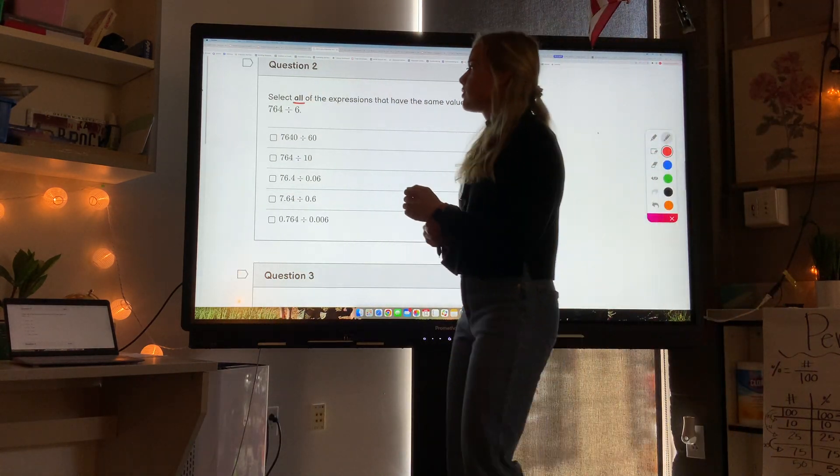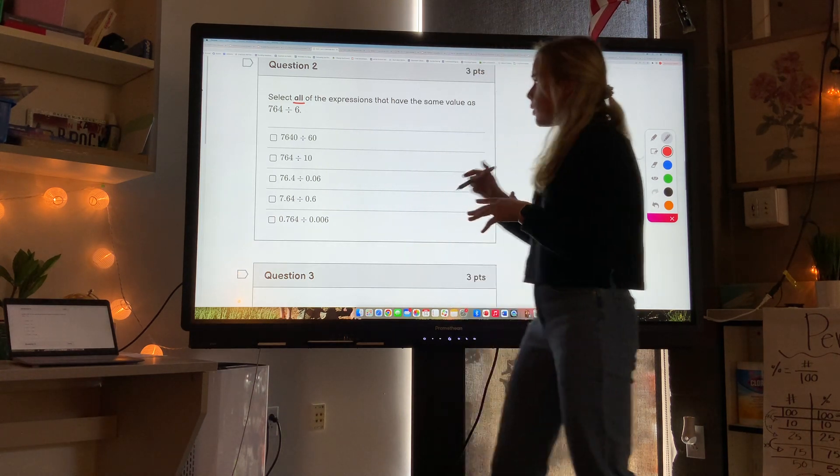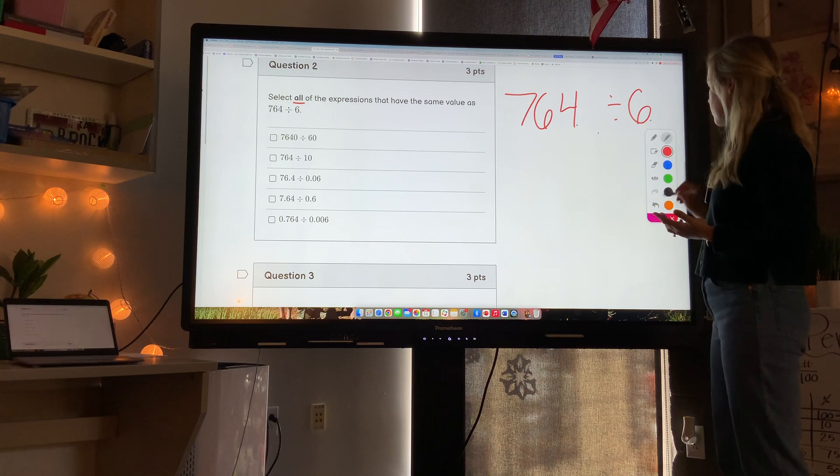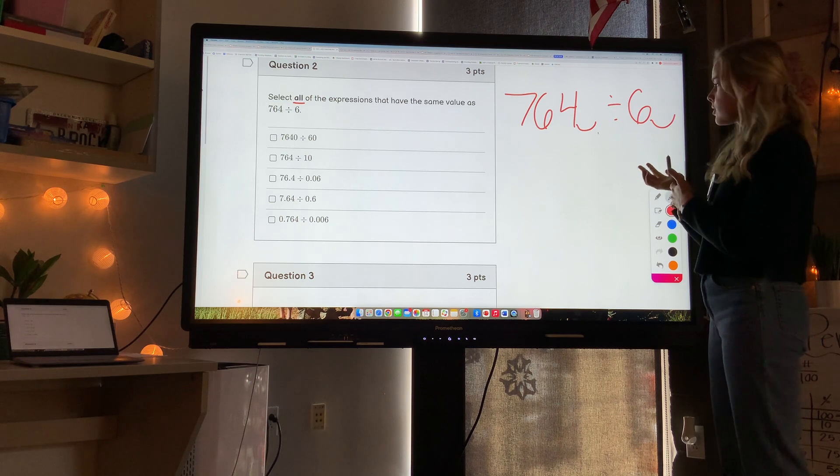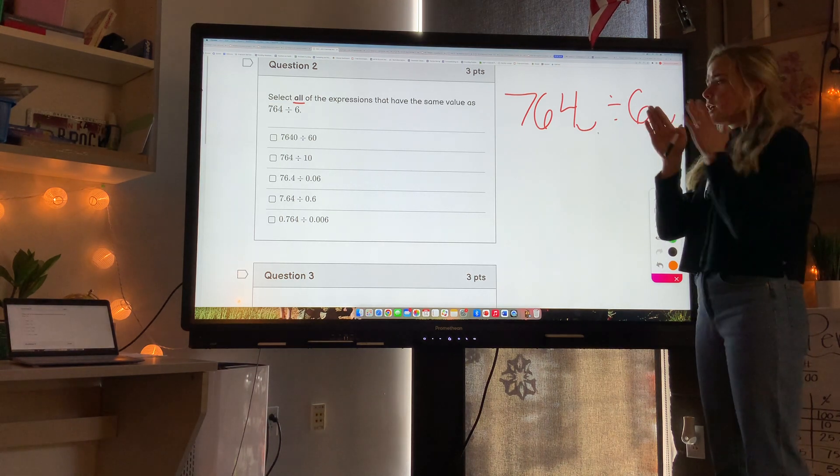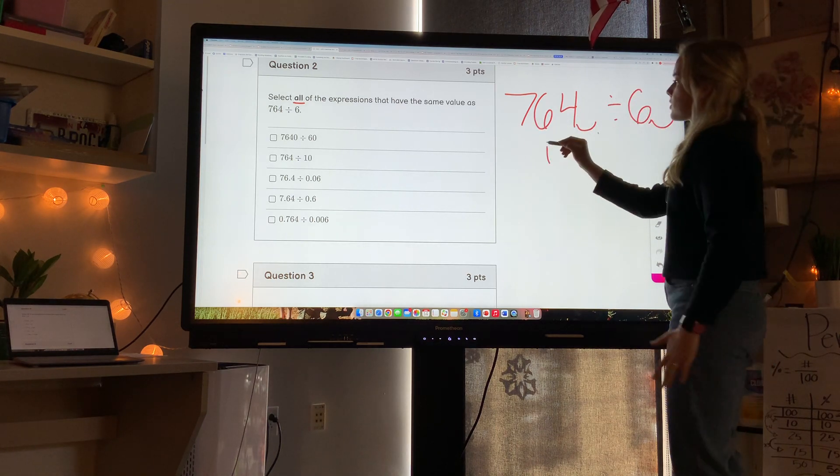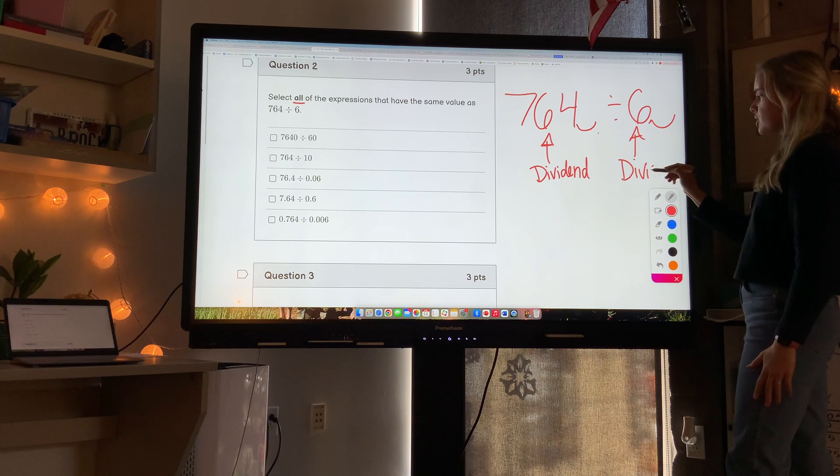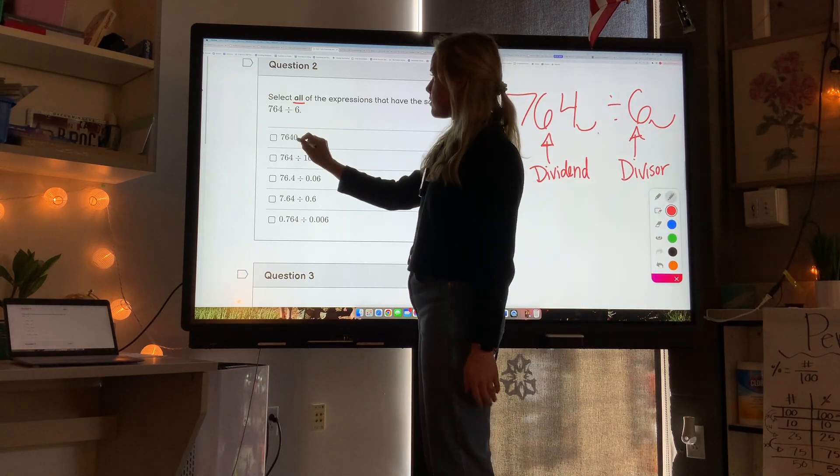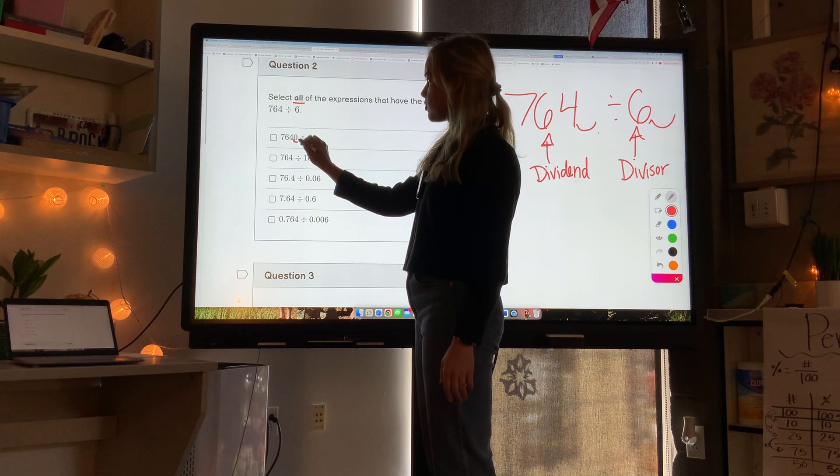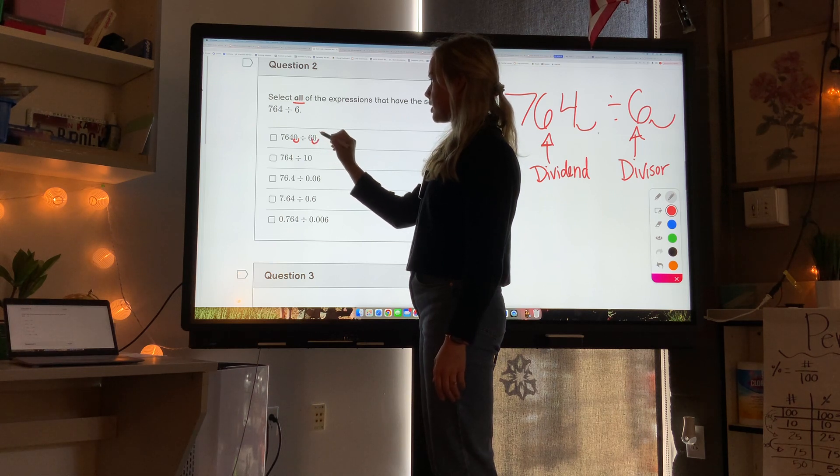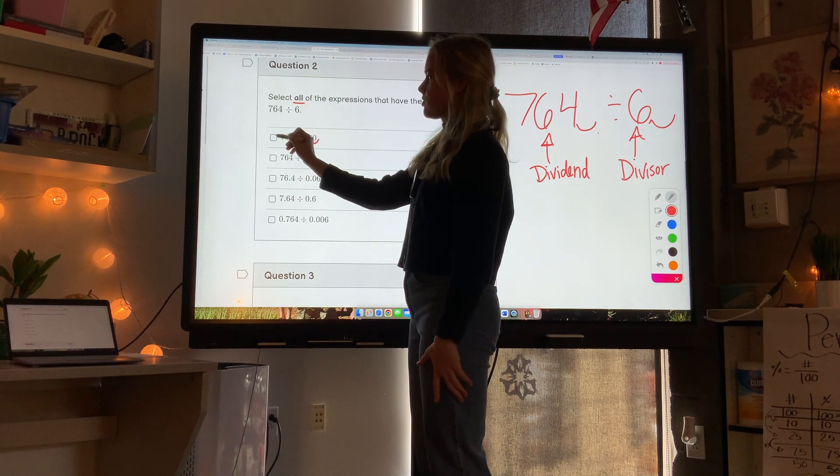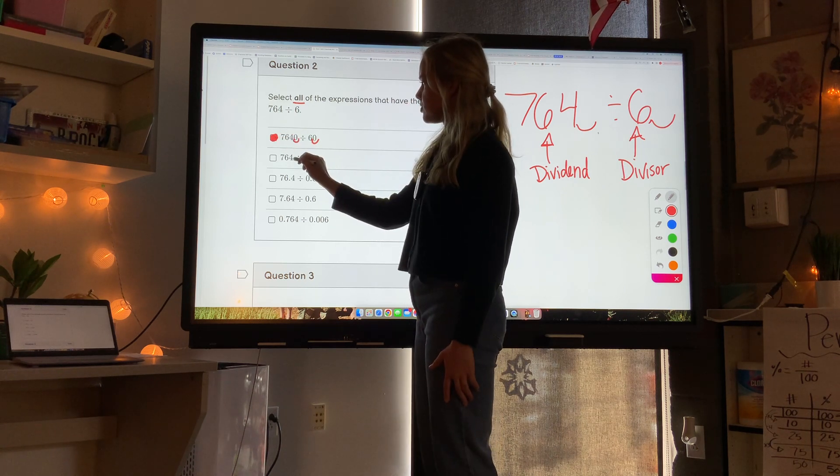When we're dividing, if I move the decimal point for both the dividend and divisor the same number of times, then the quotient is going to be the same. So this one - if this was 764 I moved the decimal to the right one time, if this was 6 I moved the decimal to the right one time. Since I moved them both to the right one time, or in other words times both the dividend and the divisor by 10, it's going to have the same answer as this.